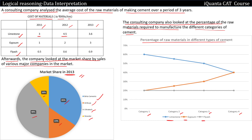For category 1 cement, 20% each of gypsum and fly ash are needed, and 60% of limestone is needed. For category 2, 20% fly ash, about 25% gypsum, and 55% limestone is needed. That is how we have to read the graph. We will go to the questions, pick up what's needed, relate all the data, and try to solve them.